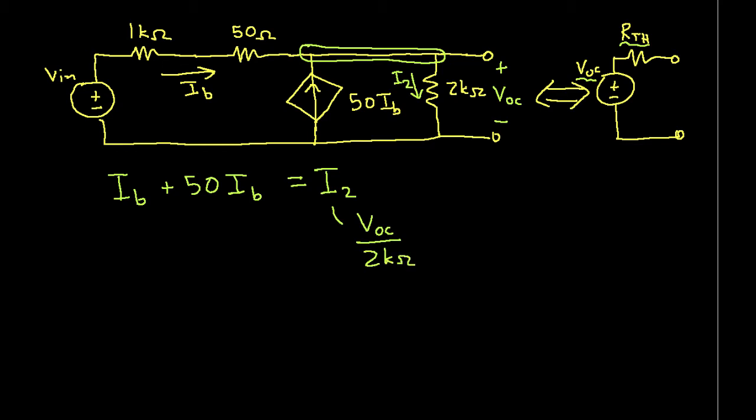So we also need I sub B, and we can find it as follows. The voltage across the 1k ohm resistor and the 50 ohm resistor in series is given by VN minus VOC. So I can write I sub B using Ohm's law as VN minus VOC divided by 1.05k ohms. This is the 1k ohm resistor plus the 50 ohm resistor in series.